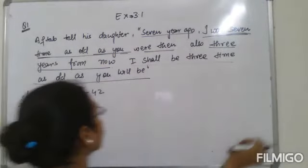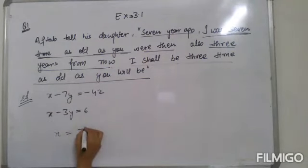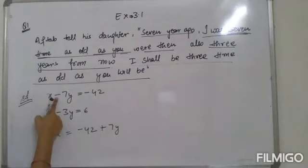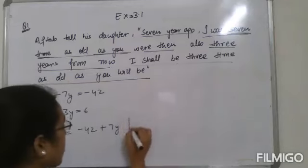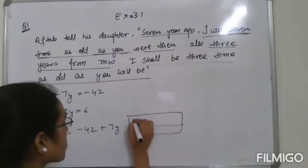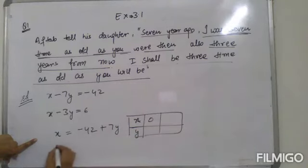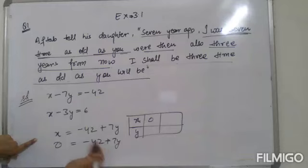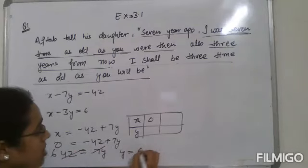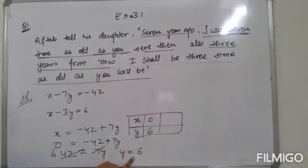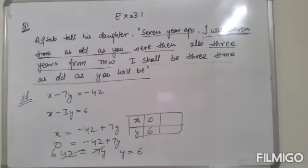From the first equation, x equals negative 42 plus 7y. To find points, when x equals 0: 0 equals negative 42 plus 7y, so 42 equals 7y, giving y equals 6. So the first point is (0, 6).